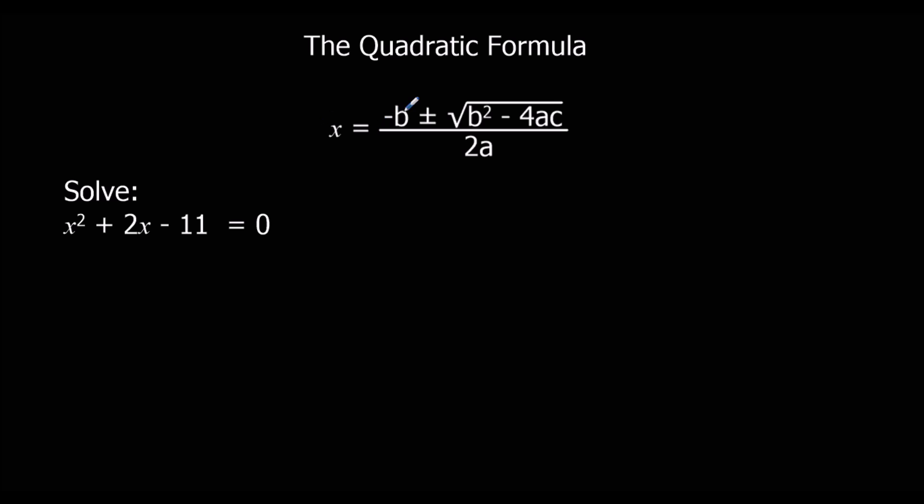So x equals minus b plus or minus the square root of b squared minus 4ac all over 2a.